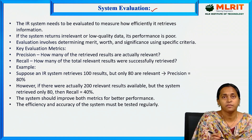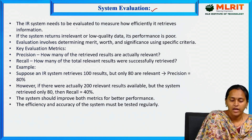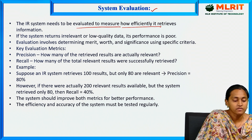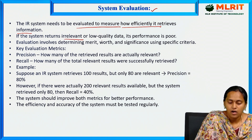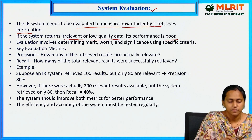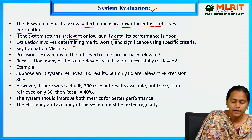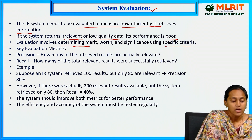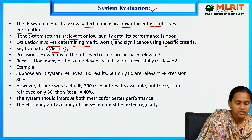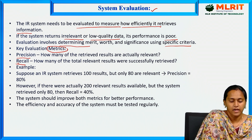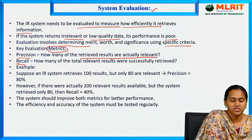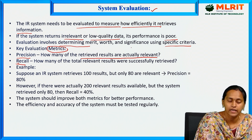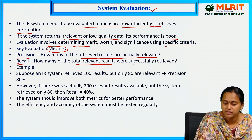The third major issue is system evaluation. The IR system needs to be evaluated to measure how efficiently it retrieves information. If the system returns irrelevant or low-quality data, the performance is poor. Evaluation involves determining merit, worth, and significance using specific criteria. The key evaluation metrics are precision and recall: precision means how many of the retrieved results are actually relevant, and recall means how many of the total relevant results were successfully retrieved.